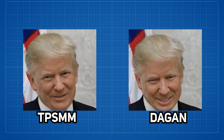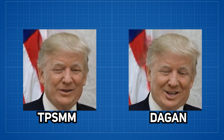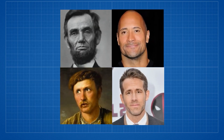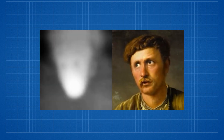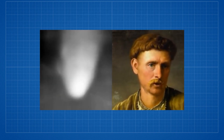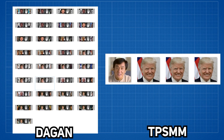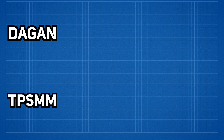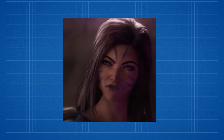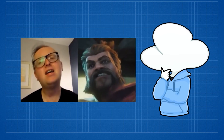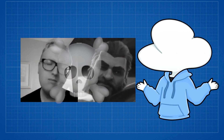Directly comparing the results from TPSMM and DAGAN, you can probably instantly tell that DAGAN performs much better on faces than TPSMM. The facial depth map helped keep the facial structure intact and just overall performs much better. I also played around with DAGAN a lot more because its processing time is around 3 times faster than TPSMM, and it's pretty good at dealing with 3D rendering or 2D illustrations.